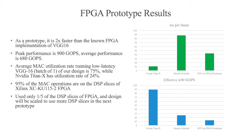On the other hand, NVIDIA's Titan X can run VGG16 at around 10 milliseconds per frame, but its hardware utilization rate is only 24%. Regarding energy efficiency, our FPGA is about 7 times better than NVIDIA's Titan X. In addition, our design is very scalable. In the current design, we only use 20% of DSP resources in the FPGA, and we'll scale it up in the next design to further boost performance.